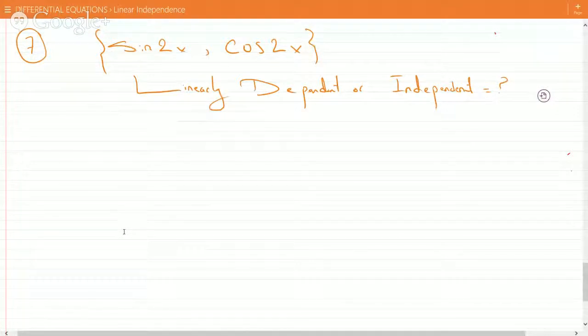So this is sine 2x and cosine 2x, and we're trying to see if they're linearly dependent or independent.